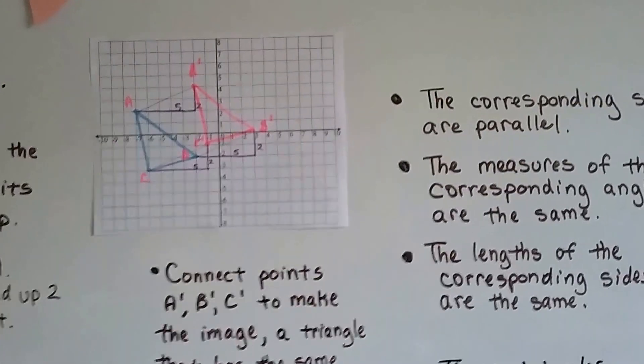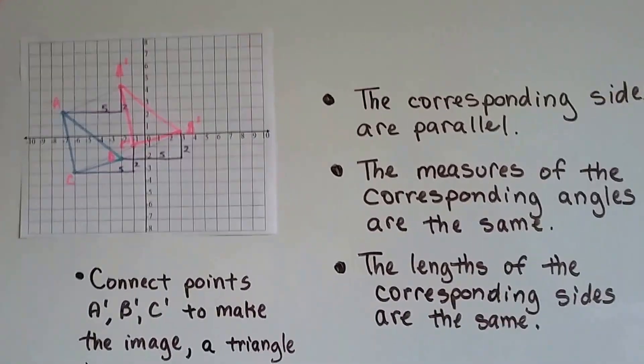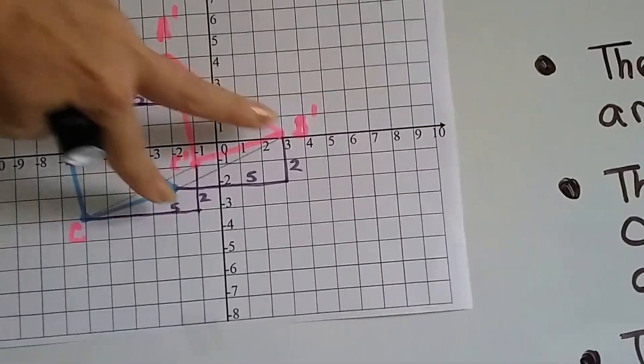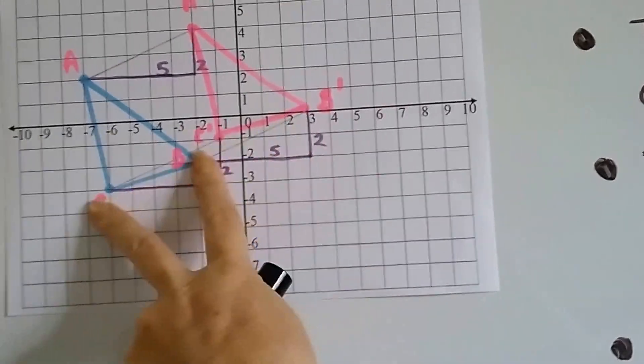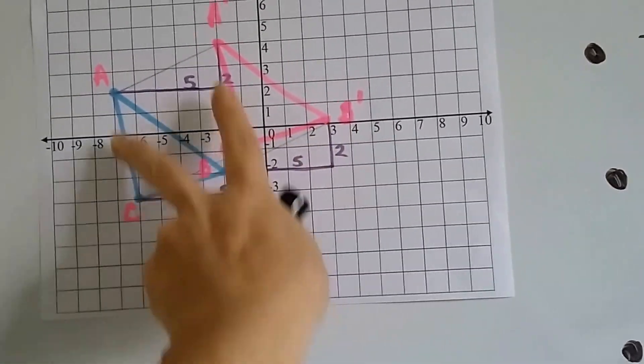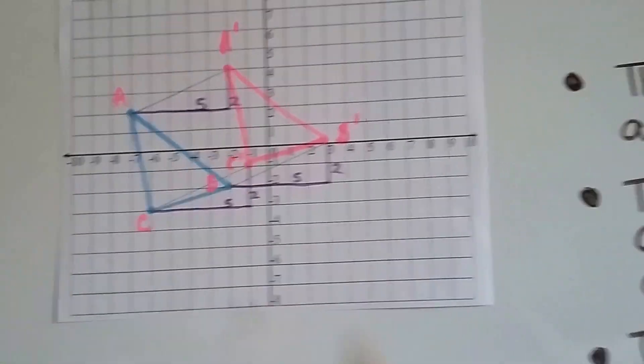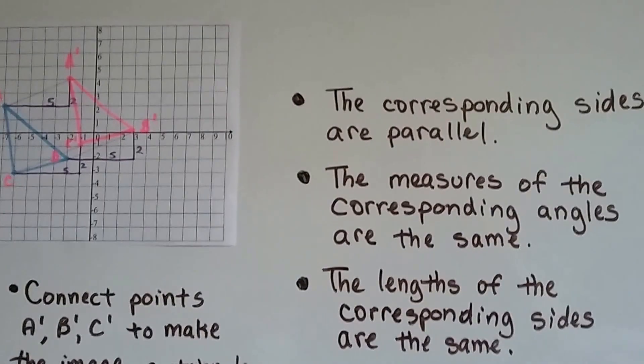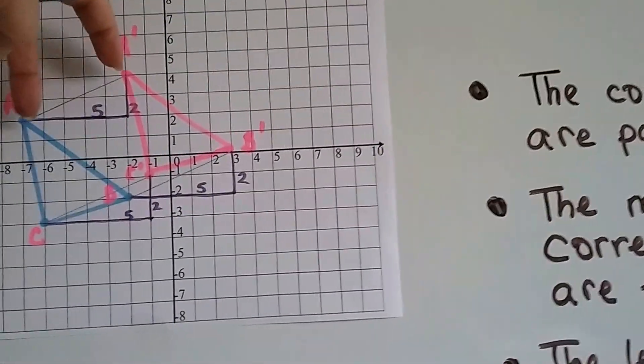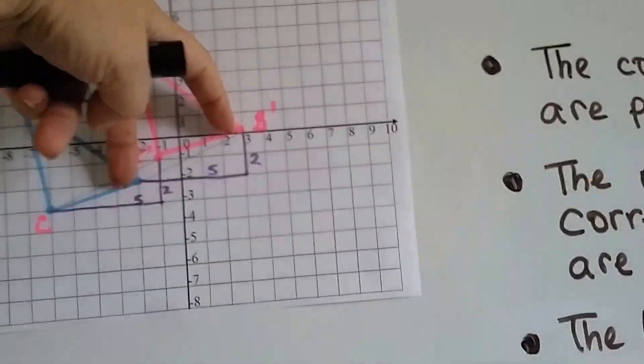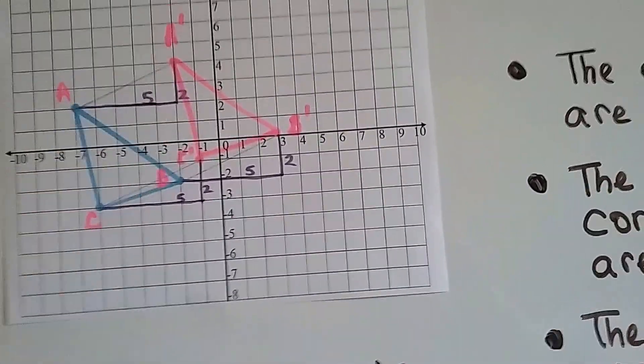The corresponding sides are parallel. So, these two sides are parallel. These two are parallel right here, and these two are parallel. The measures of the corresponding angles are the same. A and A' are the same, B and B' are the same, and C and C' are the same angles.